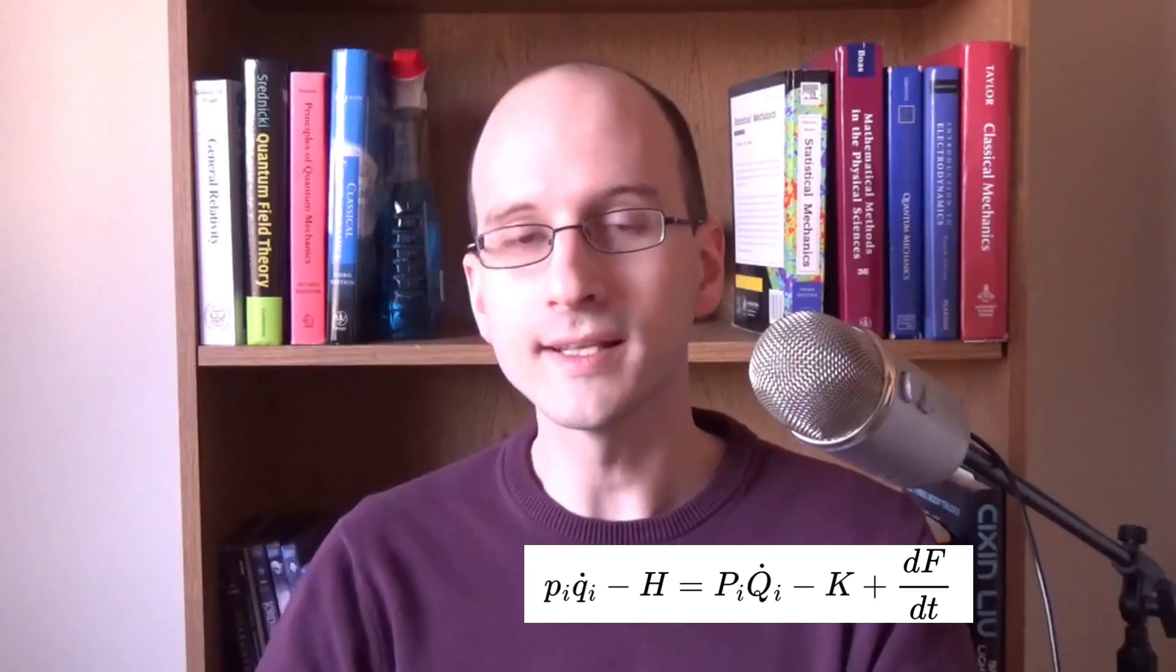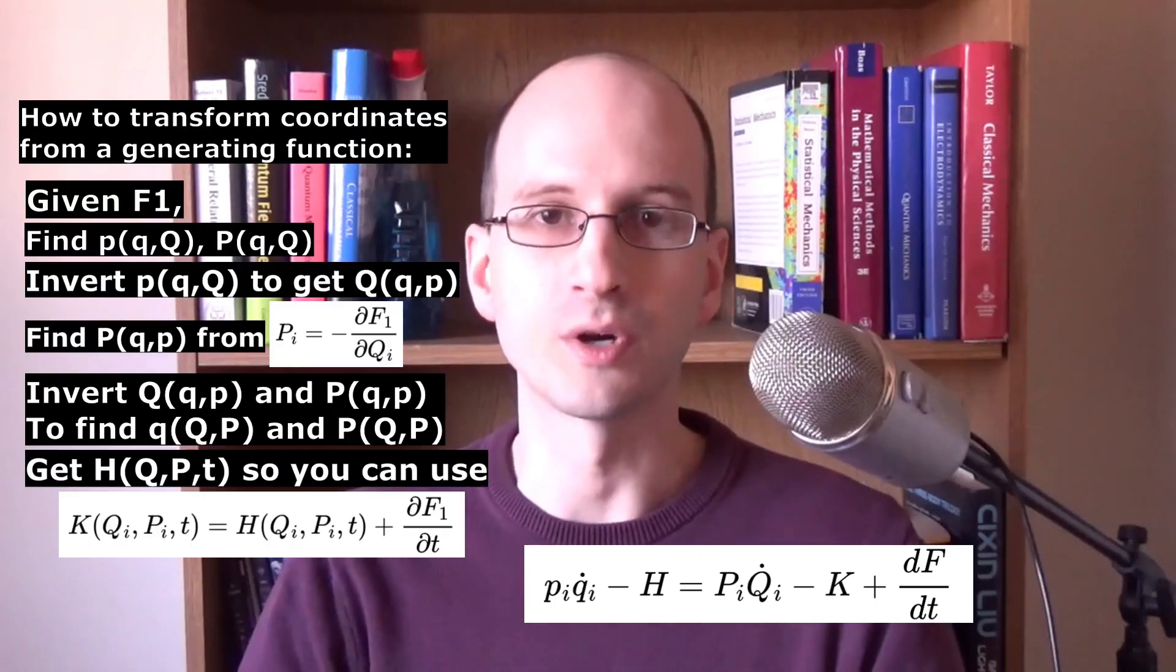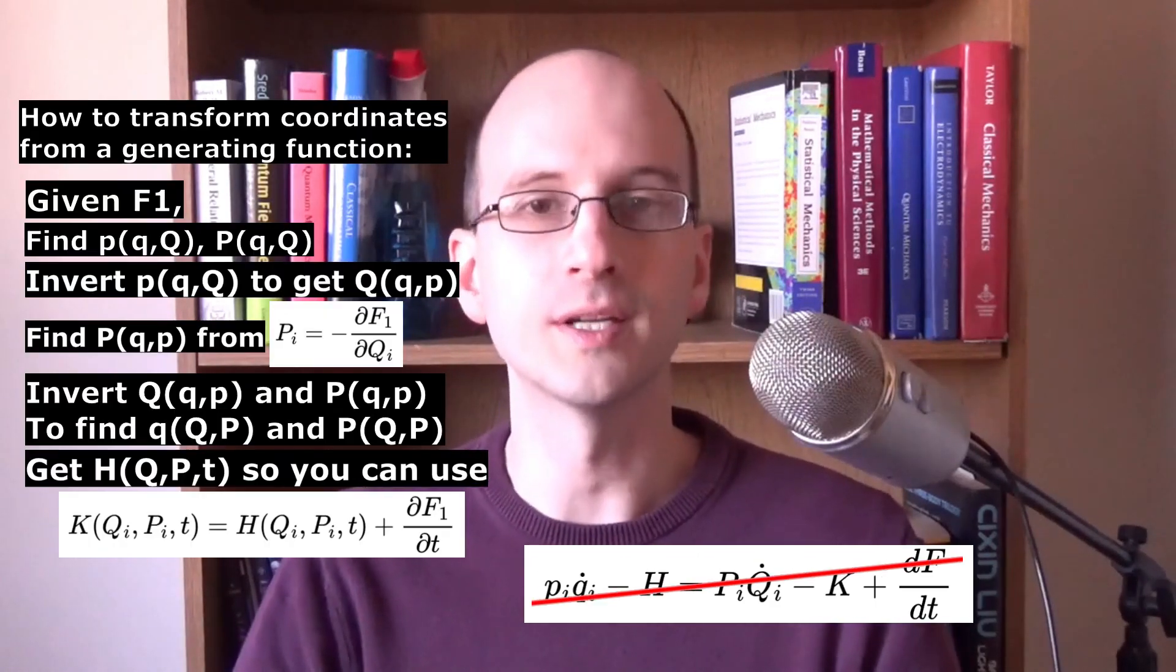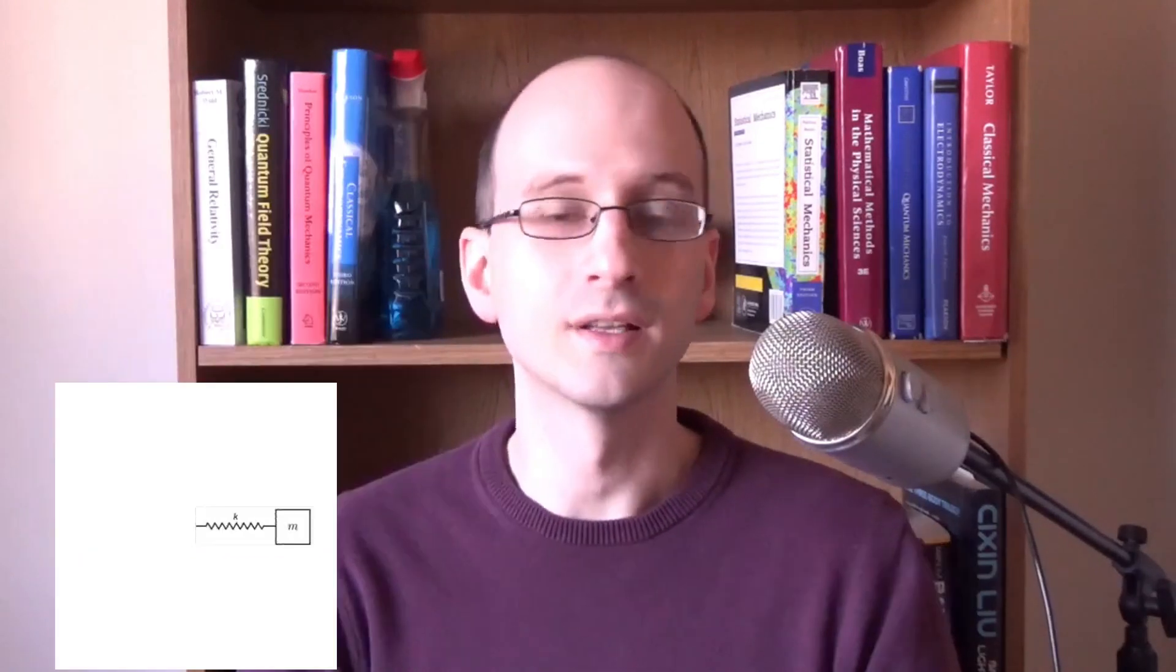The Hamiltonian transformation equation sounds important, but really it's only used to derive this process. From now on, we won't need it. We'll just follow the steps. Let's try it on our 2D harmonic oscillator.